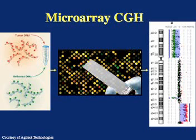Their statistical analysis program labels the regions it considers abnormal using colored bars — in this case, the bar is blue.